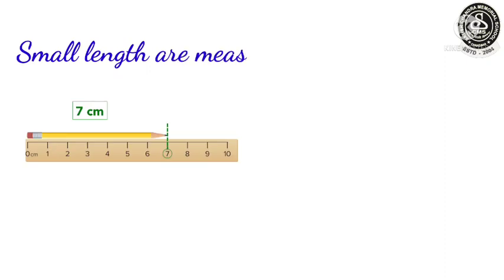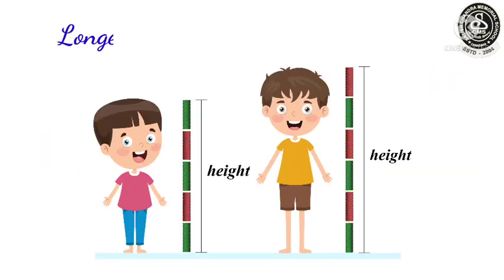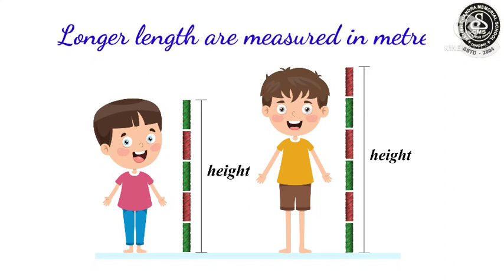Small lengths are measured in centimeters — things which are very small in size, we use the unit centimeter to measure them. When the thing is a little bit longer — like your height, the length of a door, the length of a curtain, or the length of a window — we use the meter unit to measure.